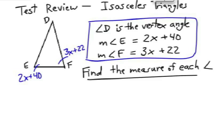Find the measure of each angle. What do you know about those angles? Well vertex angle implies that we have an isosceles triangle. So those base angles have to be congruent.